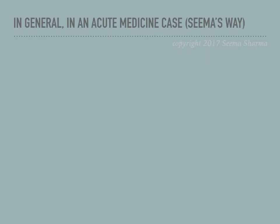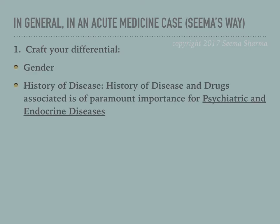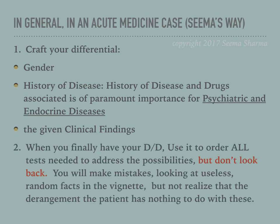In general, when I approach an acute medicine case, I craft a differential by looking at three things: the gender of the patient, the history of the disease, and the drugs or medications taken — especially in psychiatric and endocrine diseases, because with those medications you oftentimes have iatrogenic side effects — and third, the clinical findings in the vignette, the deficits, etc.